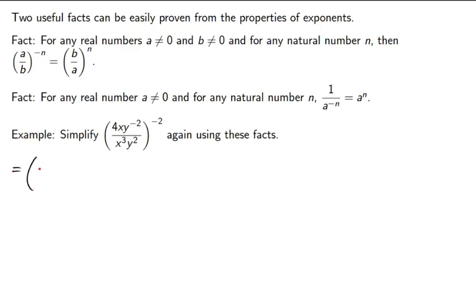This time, we'll flip it. x cubed y squared over 4xy to the negative 2. Now, it's to the positive 2 power. So, flip it, make the exponent positive. Then, let's distribute it. x cubed squared, I'll multiply my exponent. y squared squared, multiply my exponent. 4 squared is 16. x squared. y to the negative 2 squared will multiply our exponents.